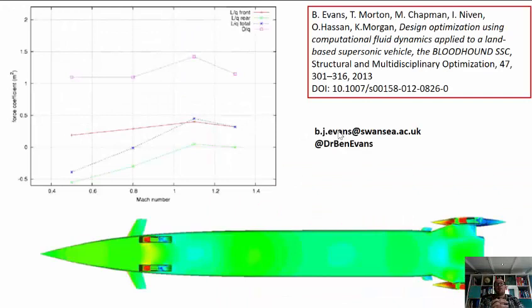What the optimizer returned to us was a geometry definition for the rear of the car, and this is the post-optimized geometry. In fact, it's the geometry that has now gone on to be built and is currently being tested in the real Bloodhound car.